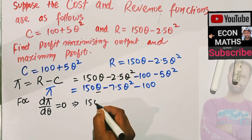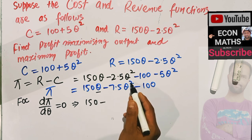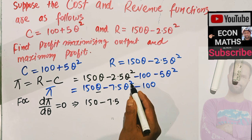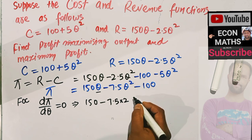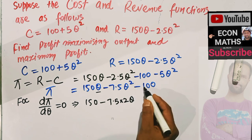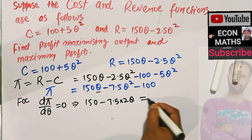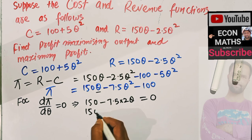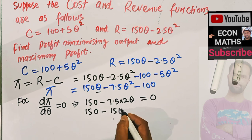The derivative of q is 1, so we are left with 150. The derivative of q squared is 2q by the power function rule, giving us 7.5 times 2q. The derivative of the constant is 0. Setting this all equal to 0, we have 150 minus 7.5 times 2, which comes out to be 15q, equal to 0.